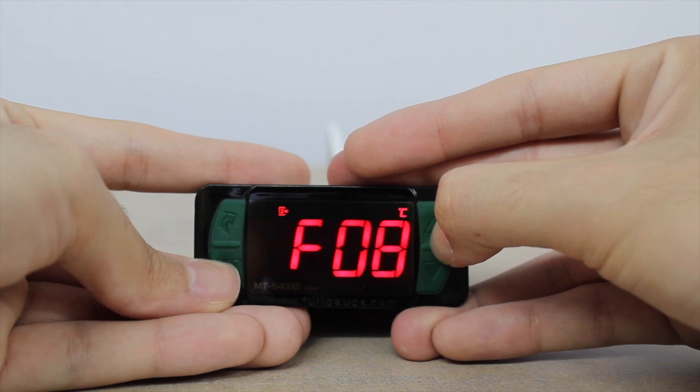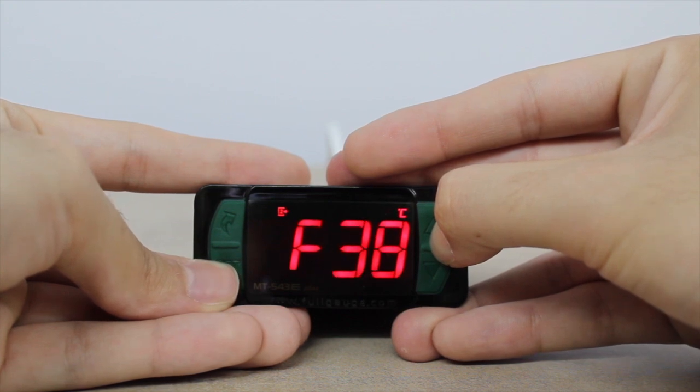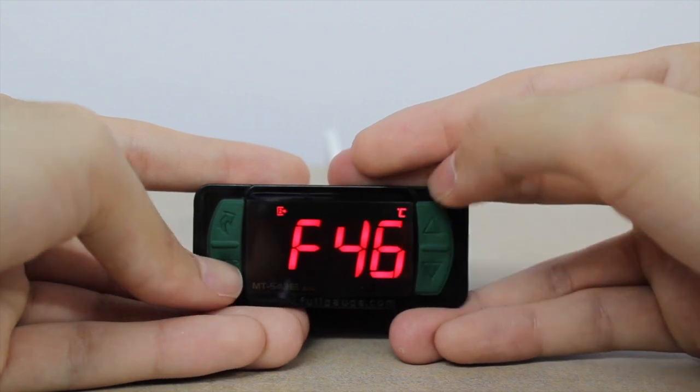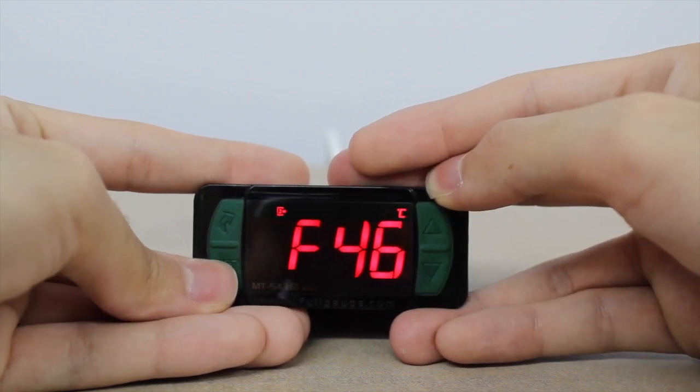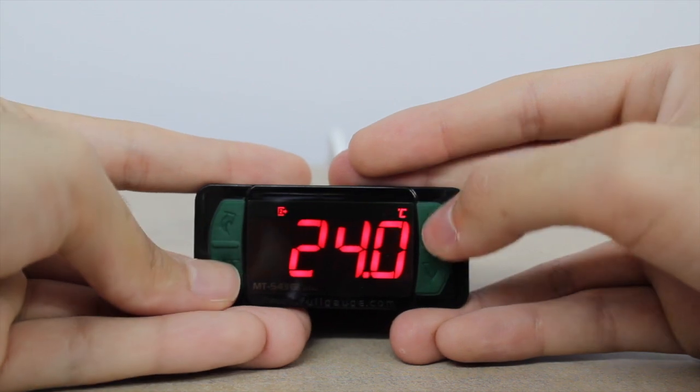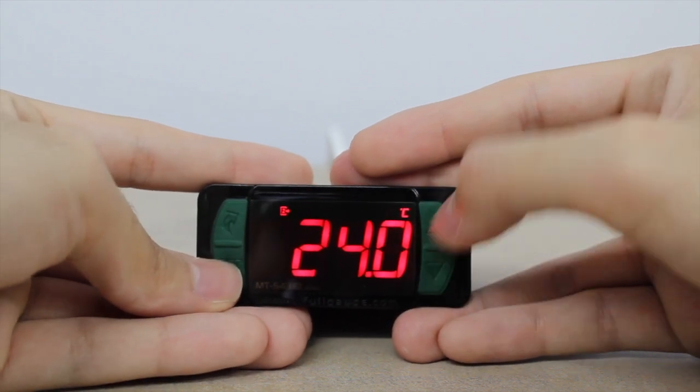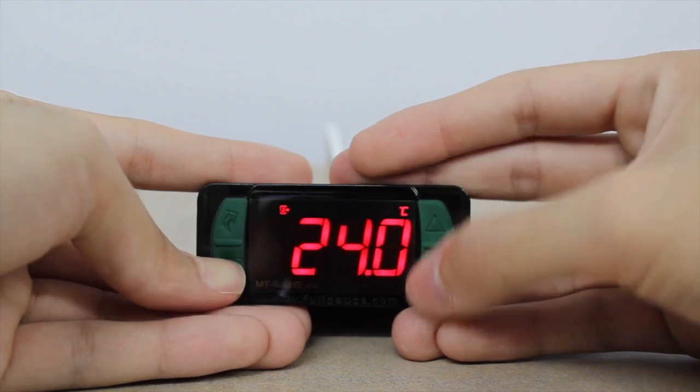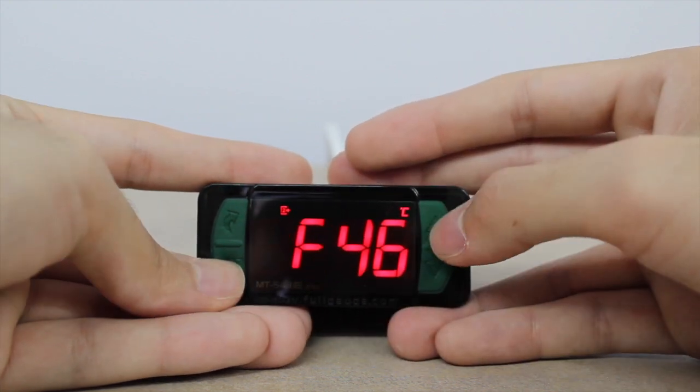Then let's go to Function F46 to set the first level temperature, defined here as 24C. We'll set the time in minutes of this first level in F47, defined here as 10 minutes.